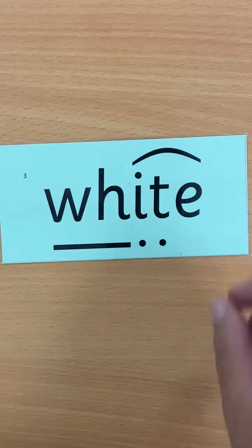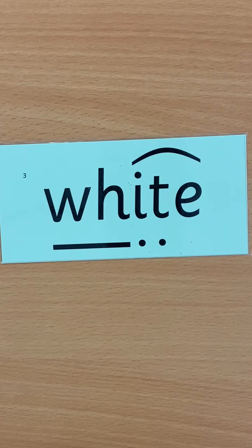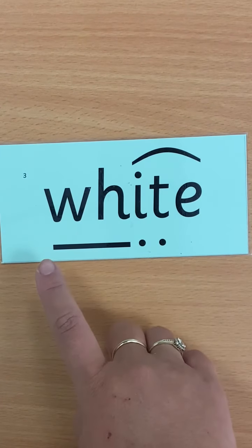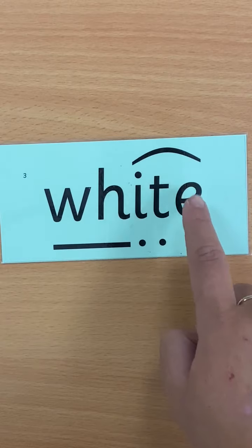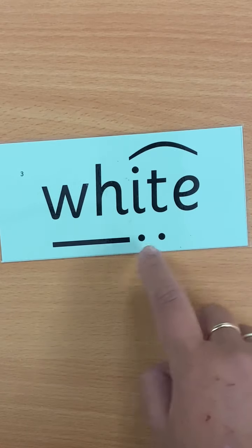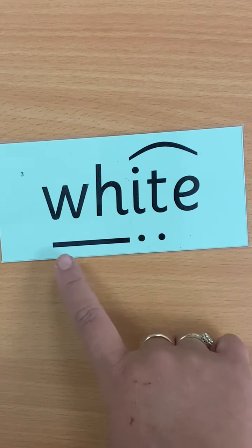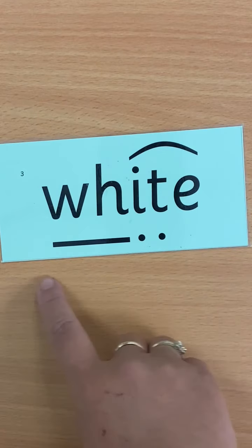Next word. Look for the split digraph. Are you ready? That is W, I, T — white.